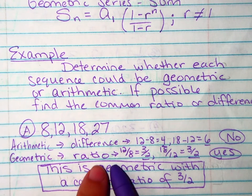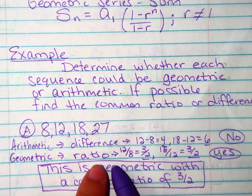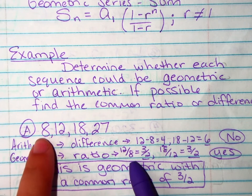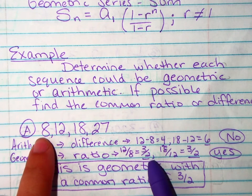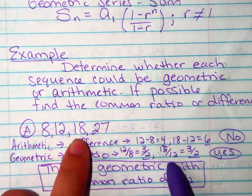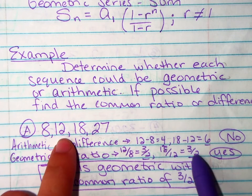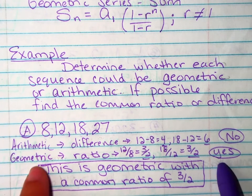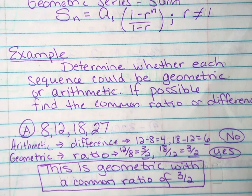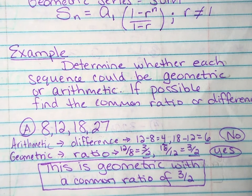For geometric we're going to look at the ratio. So we're going to use the same numbers we're just going to divide them. So the second term divided by the first we get 3 over 2. The third term divided by the second we get 3 over 2. So we do know that this is geometric with a common ratio of 3 over 2.